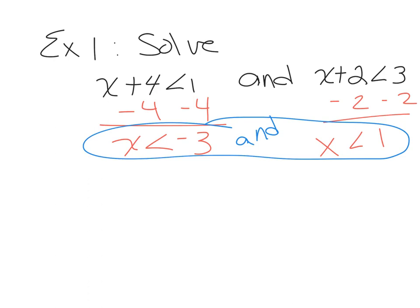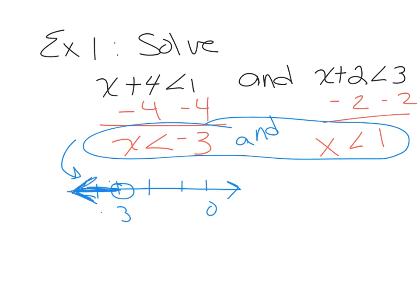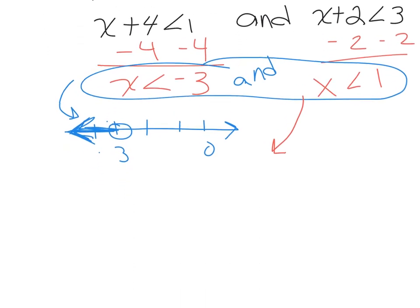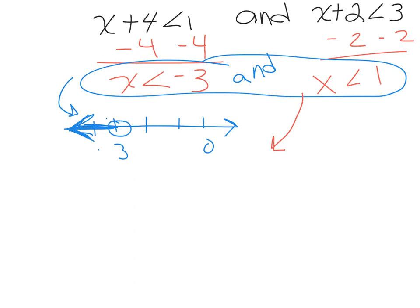I like to first make a graph of my solution statements — it's easier to picture that way. I'm going to make three different graphs. The first is for x is less than negative 3: the point at negative 3 is open because there's no equal sign, and all numbers less than negative 3 are shaded. Then I'll make another graph for x is less than 1, lining them up so I can see where the shading overlaps.